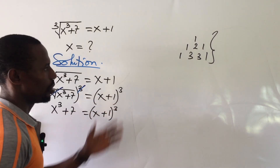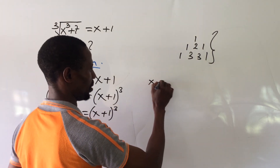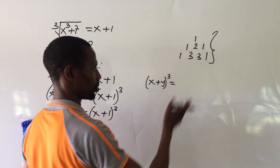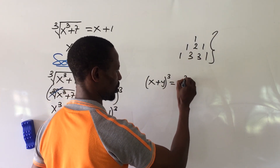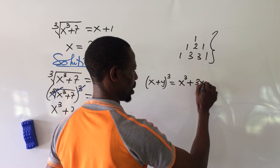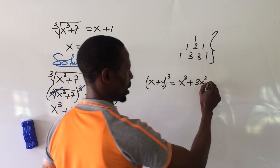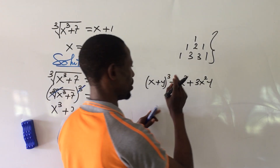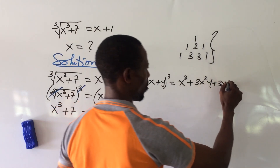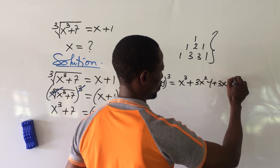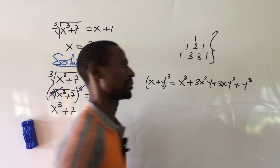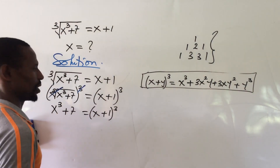Recall from our binomial expansion: (x + y)³ equals x³, plus 3x²y, plus 3xy², plus y³. The coefficients from Pascal's triangle are 1, 3, 3, 1.